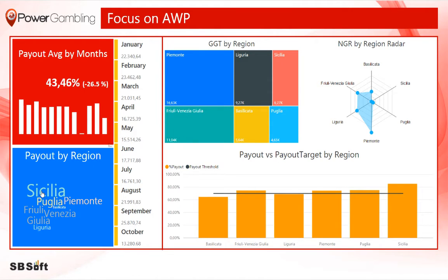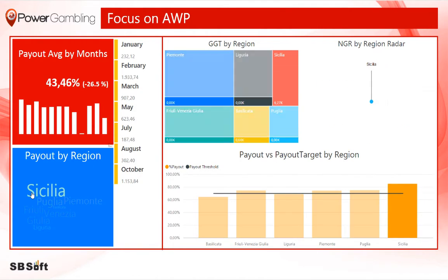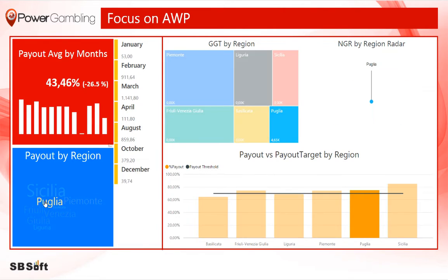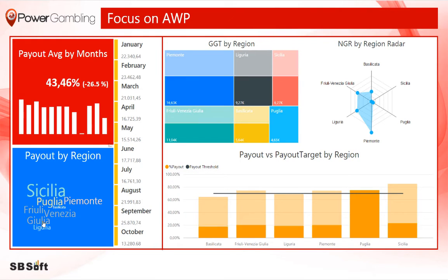You can simply notice the difference of all AWP regions payout with the word cloud chart, where bigger is the name of the region, bigger is the payout percentage.